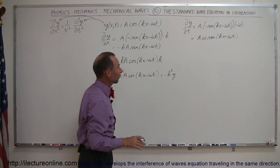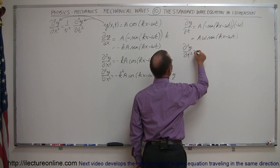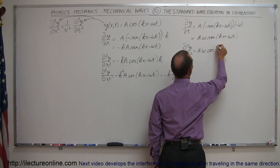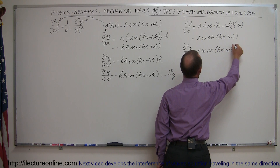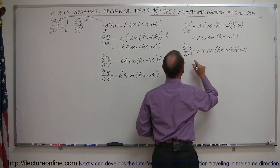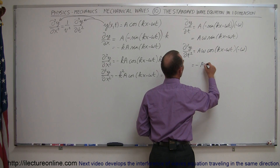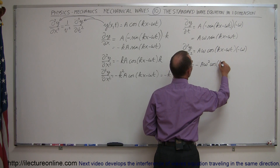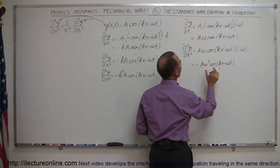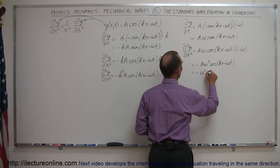Now we do that a second time because we want the second derivative. So the second derivative of y with respect to time equals — we have a omega, those are constants. The derivative of the sine is the cosine of kx minus omega t. And then we multiply that times the derivative of the angle which is minus omega, so that goes to the front. This is equal to minus a omega squared cosine of kx minus omega t. Since a times the cosine of this angle is of course my original function y, this is equal to minus omega squared y.